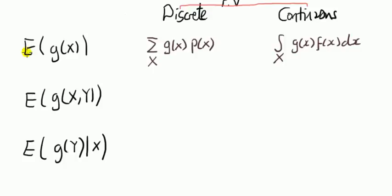Well the formula if x is discrete is the sum of x of g(x) times probability, probability mass function. And for the continuous case it's the integral of x of g(x) times f(x) which is the pdf of x.